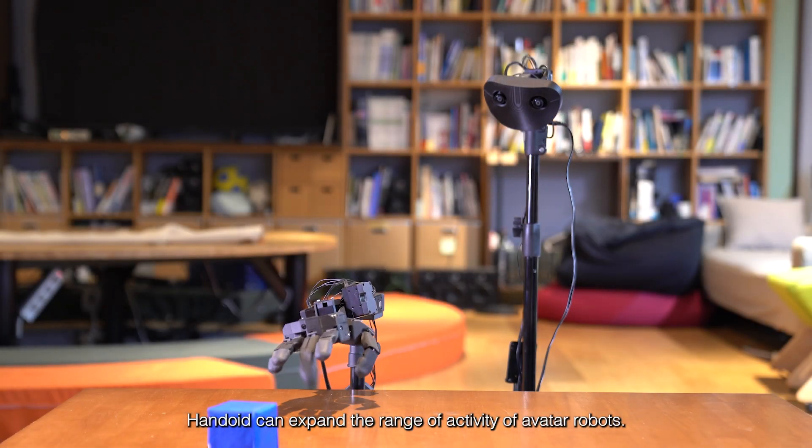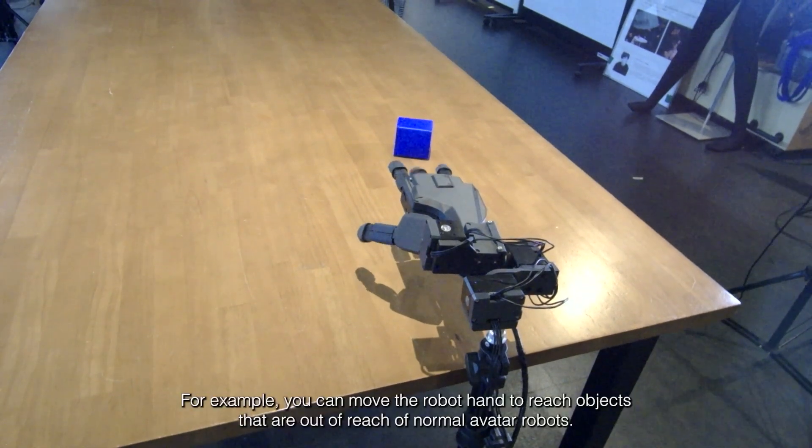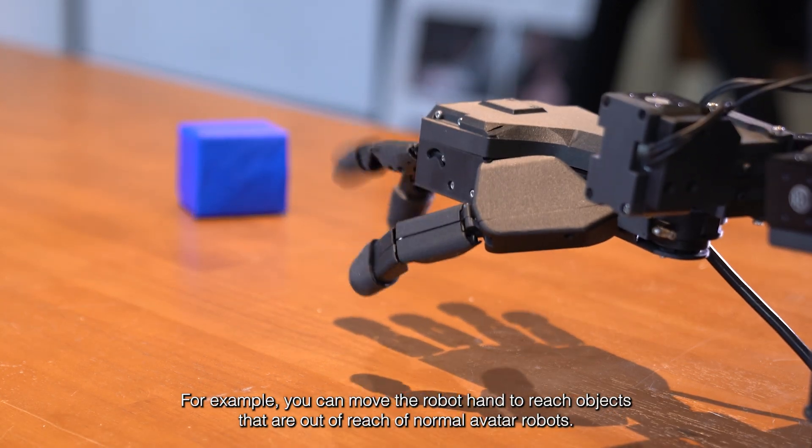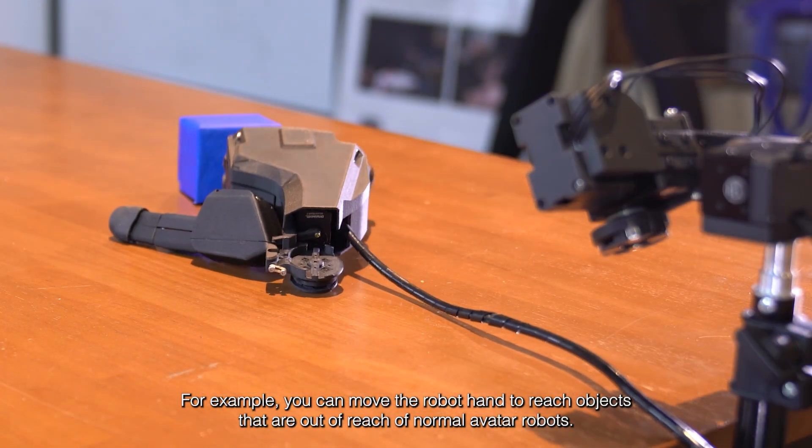Hangoid can expand the range of activity of avatar robots. For example, you can move the robot hand to reach objects that are out of reach of normal avatar robots.